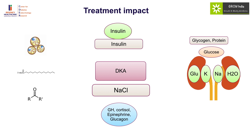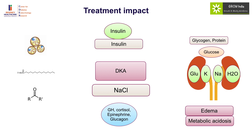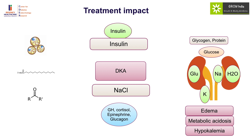The problems that arise with treatment are: too much fluid causes a rapid shift in osmolality resulting in cerebral edema. Similarly, too much sodium chloride along with potassium chloride predisposes to hyperchloremic metabolic acidosis. On the other hand, excessive insulin use causes shifting of potassium to the cells as well as potassium loss, causing hypokalemia. One needs to be cautious not to induce complications like cerebral edema, metabolic acidosis, and hypokalemia.